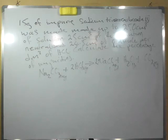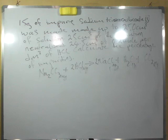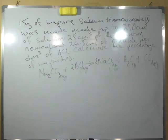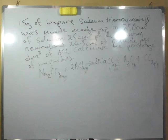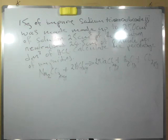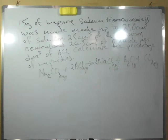Hello everyone. We're going to solve a problem on the board. The question says: 15 grams of impure sodium trioxocarbonate was made up to 250 cm³ of a solution. 25 cm³ of this solution neutralized 24.5 cm³ of 0.2 mol/dm³ of hydrochloric acid. Calculate the percentage of impurities.